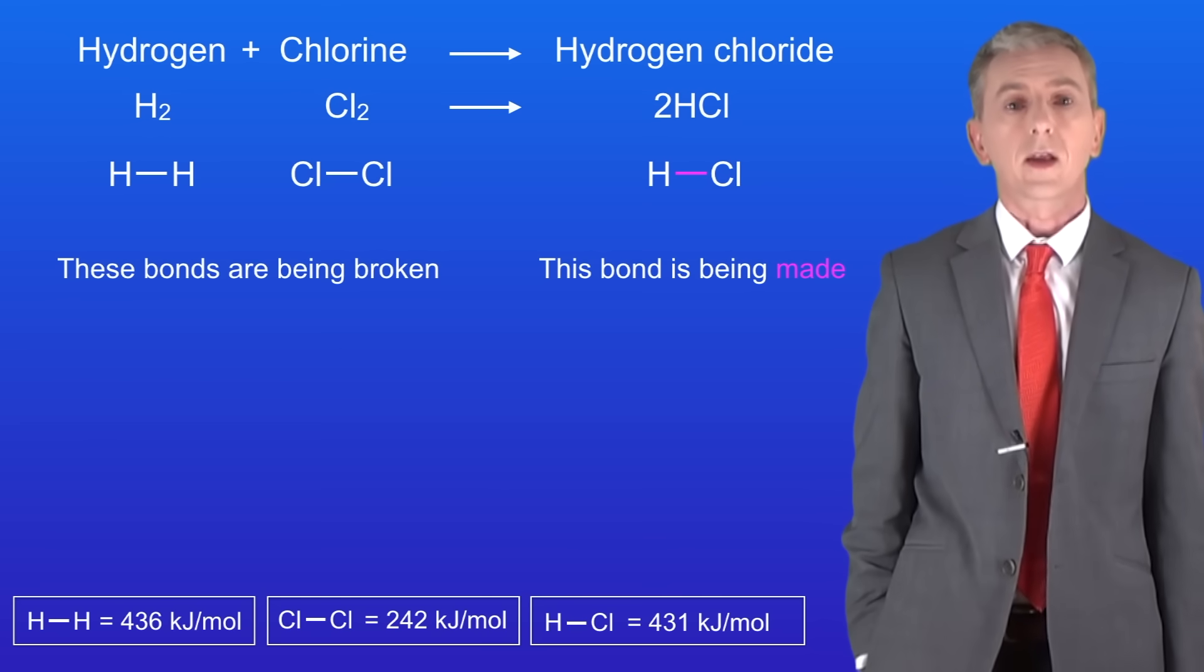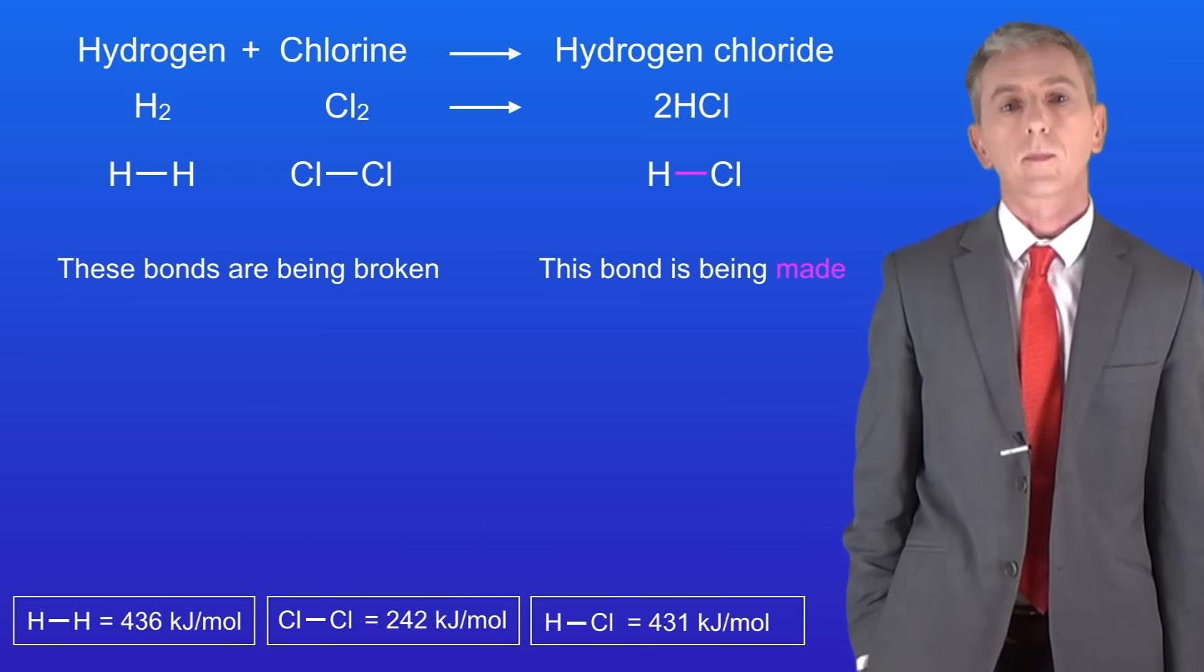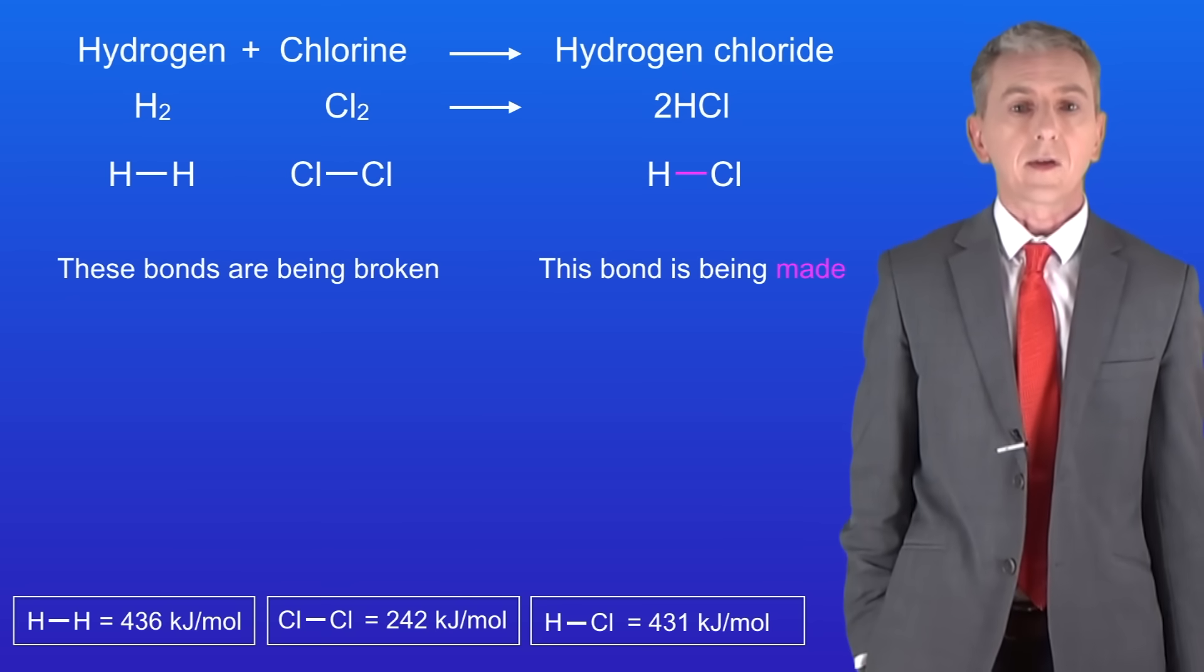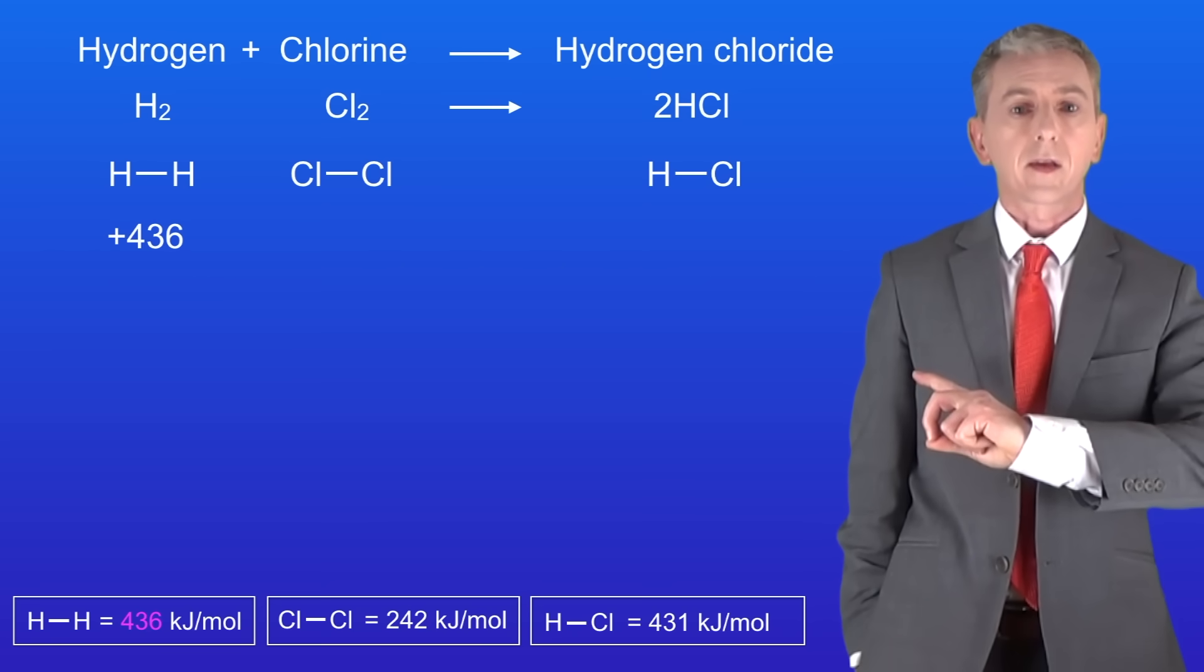We now need to put the energy values in. Breaking the bond between the hydrogen atoms requires 436 kilojoules per mole. Remember that breaking bonds is endothermic, so energy is gained. That means we need to write a positive sign. So here's the value for breaking that bond.